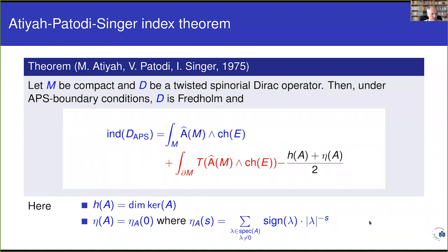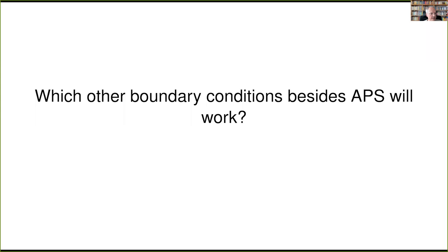What I'm concerned with today is which other boundary conditions work besides Atiyah-Patodi-Singer — what are the most general boundary conditions you can impose and still get a good, reasonable theory? I will make precise what that means later.